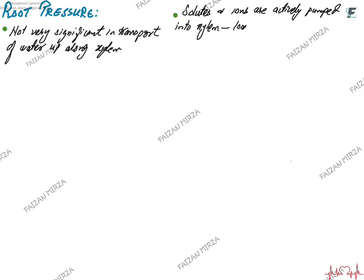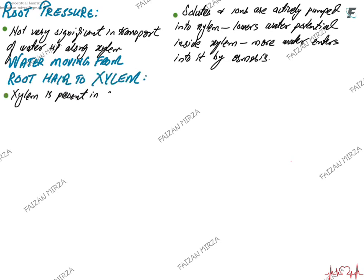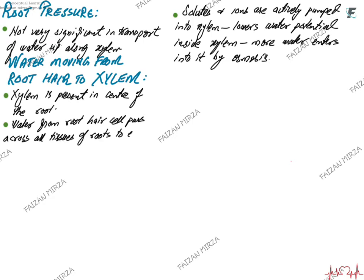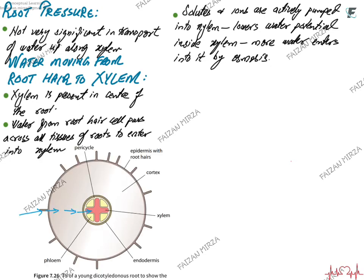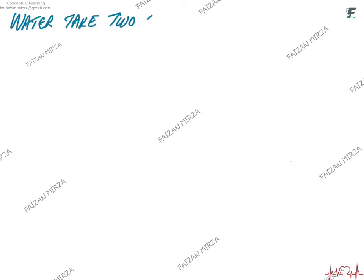Root pressure is not very significant in transporting water up the xylem. In root pressure, solutes and ions are actively pumped into the xylem first, lowering the water potential in that region, and more water is drawn in by osmosis — this is root pressure. Water moving from root hair cell to xylem: the xylem is present in the central part of the root arranged in a star-shaped structure. Water from the root hair cell passes across the cortex tissue and enters the xylem.